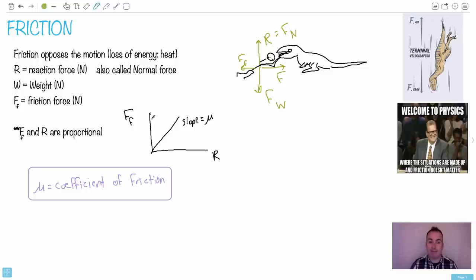And this is the key thing is that F, the friction force, and the reaction force, so the normal force, they're proportional. What that means is you have a bigger force of friction when you have a bigger reaction force. And it turns out they're related to each other by this relation here, that the slope of this or the gradient of this will be mu. Mu is a symbol we use for the coefficient of friction.